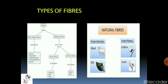Types of Fibres. In Class 6, we learned that fibers are of two types: man-made fiber and natural fiber. Examples of man-made fibers are nylon, polyester, rayon, polyethylene, polypropylene, etc. Natural fibers are obtained from plants and animals. From plants we get cotton, jute, linen, etc. From animals we get wool and silk. In today's chapter, we will be discussing wool and silk in detail.